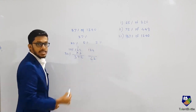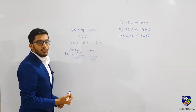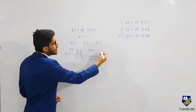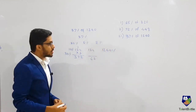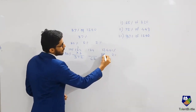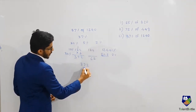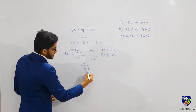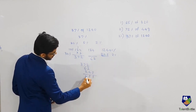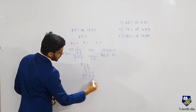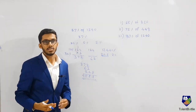Now I need 2 percent. 10 percent of 1240 is 124, so 1 percent is 12.4, and 2 percent is 24.8. Now I add them all: 30 percent is 372, 5 percent is 62, and 2 percent is 24.8. The total is 458.8. By this method you can easily split the percentage and get answers in a faster way.